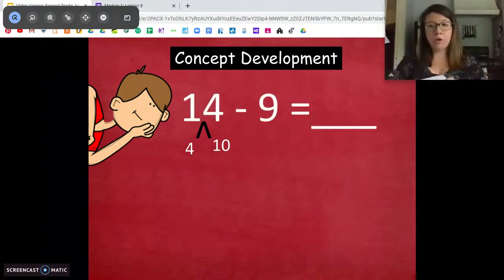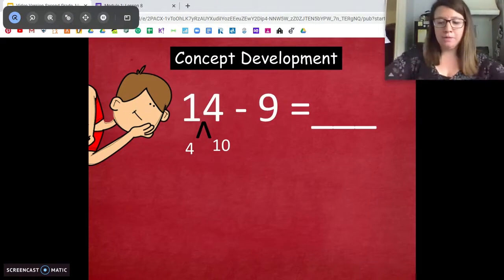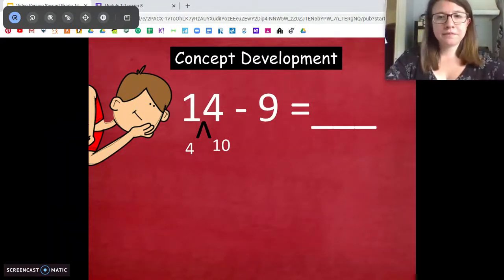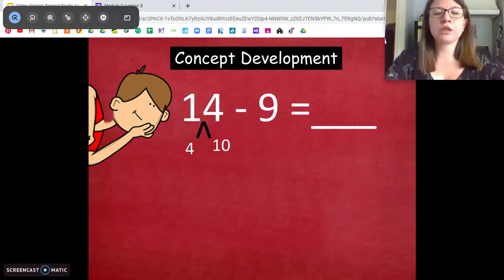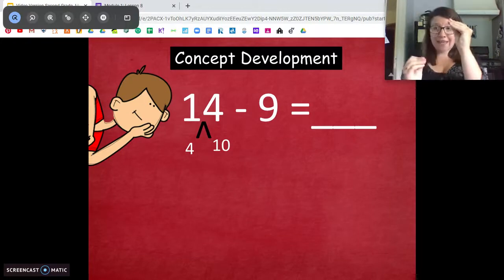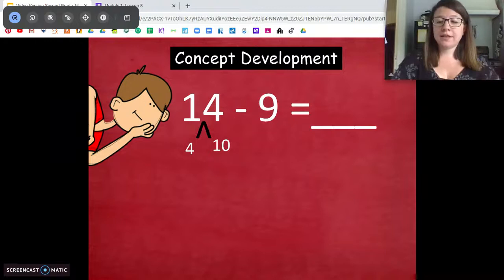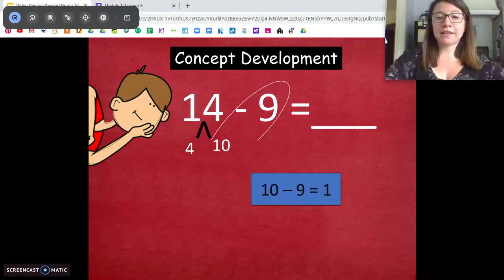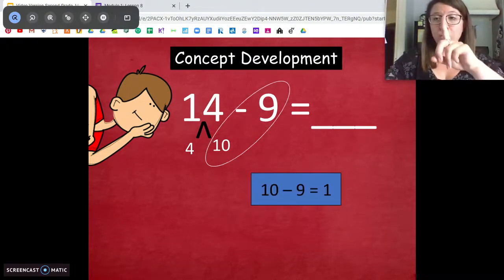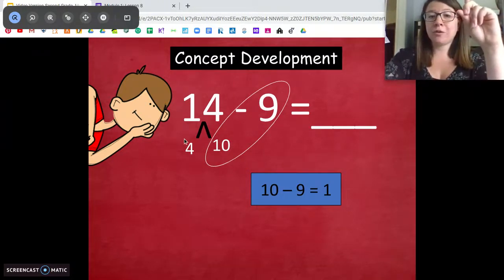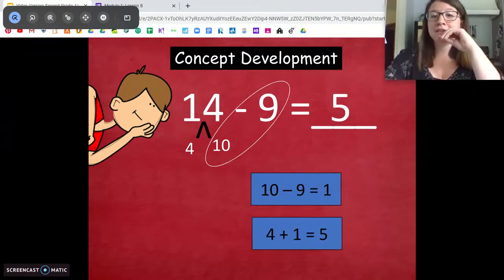Try this next one on your own. Pause. Go. Ready? Let's go over it. This one we're used to. We have the 14. We take 10 from 14. So one of our parts is 10, and then we have our 4 extra 1s. Same first step. 10 minus 9. 10 minus 9 is 1. And then we add what? Our extra 1s to get 5.